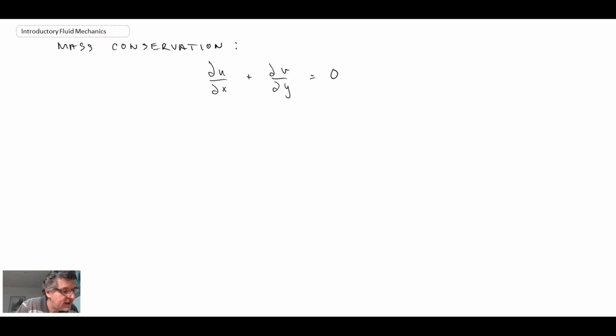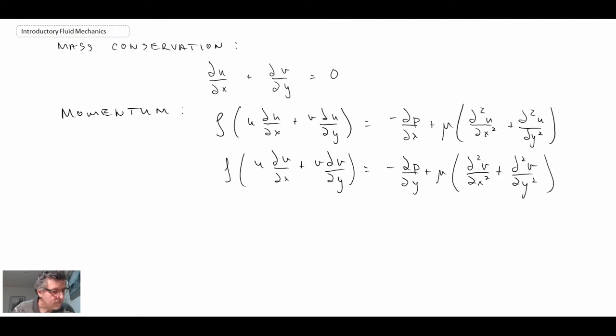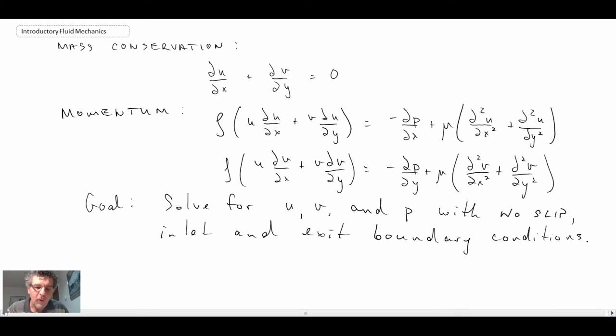We have those as our equations for the 2D incompressible flow and this is where we are beginning. The goal is to solve for u, v, and the pressure, the external pressure, subject to the boundary conditions of no slip along the wall. So no flow through the wall and no movement to the fluid at the wall and inlet and exit boundary conditions.